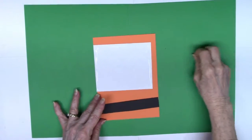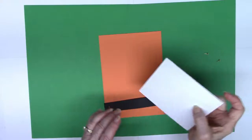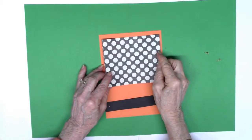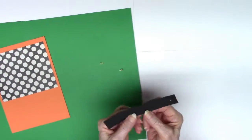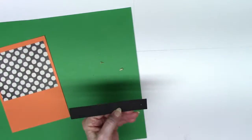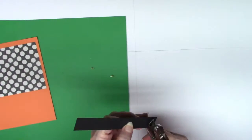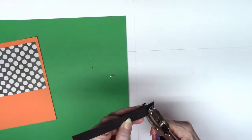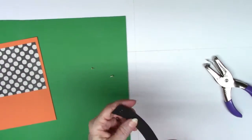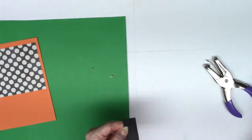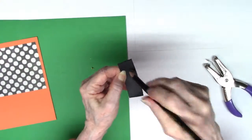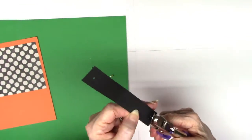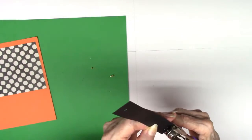Now I'm starting with the five by seven piece of orange paper, putting down some pattern paper which is about four and a fourth, four and a half inches wide. You could make it really any length or width you want to, whatever pleases your eye. And then this strip, this black strip I was talking about, that's one by five.